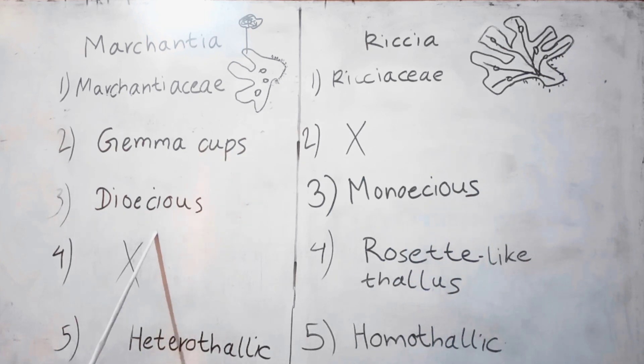Marchantia is a dioecious plant, meaning male and female reproductive organs are present on separate plants. Riccia is monoecious, meaning male and female reproductive organs are present on the same plant.